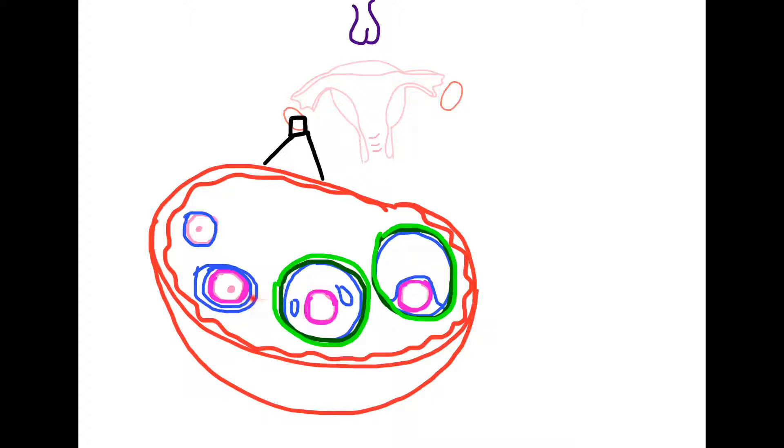This primary follicle then changes into a secondary follicle where the multiple layers of granulosa cells develop fluid-filled cavities. It also develops a second layer of cells called theca cells. The theca cells are divided into theca interna, which is a dark green one, and theca externa, which is a light green one.